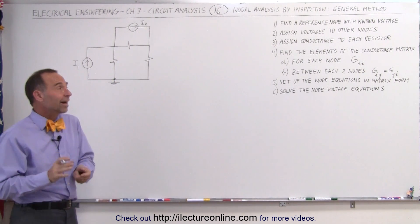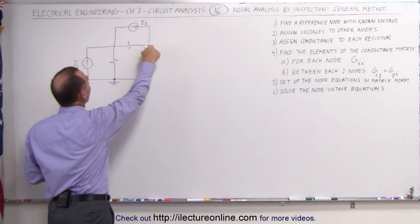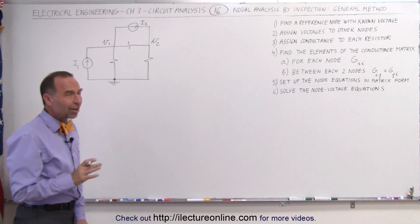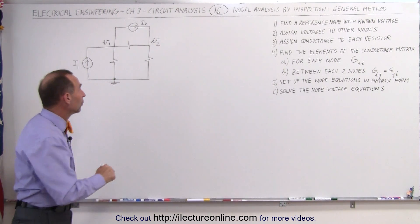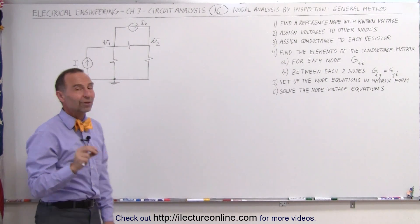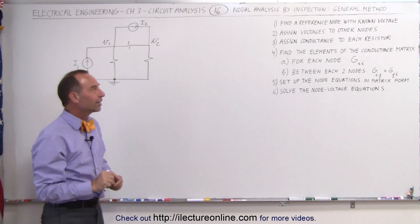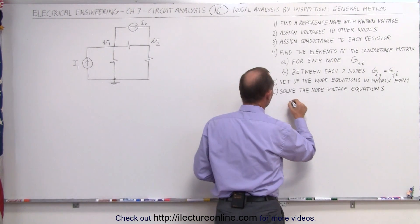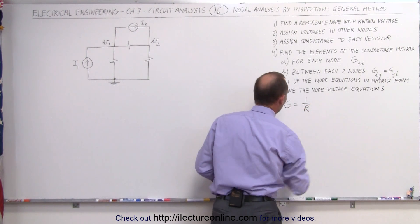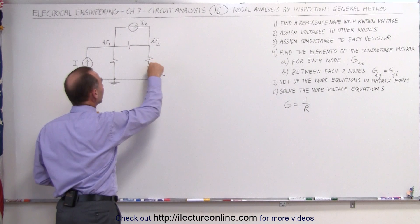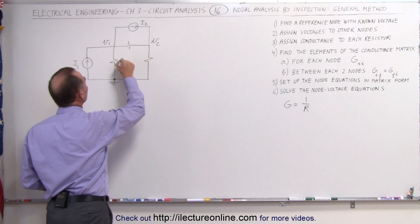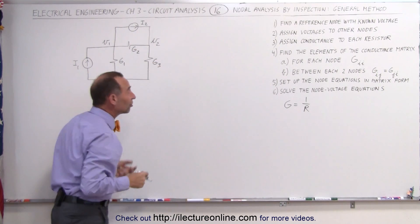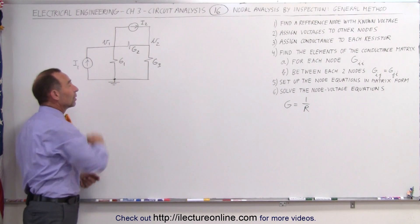The second step is to assign voltages to the other nodes. There are two other nodes — let's call them V1 and V2. The next step is a little different from before: instead of assigning resistances to the resistors, we assign conductances, which is the inverse of resistance. So conductance G equals one over resistance R. If the resistors are R1, R2, and R3, then the conductances are G1, G2, and G3, where each G is simply the inverse of the corresponding resistance.